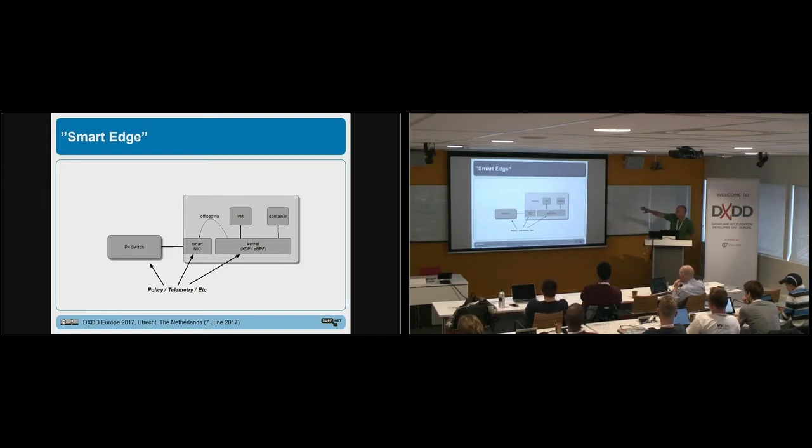So this is basically this ecosystem. The VMs and containers on the server, kernel with XDP and eBPF, SmartNIC in the server that can do offloading and can also be programmed. And towards the wide area network, P4 switches that are also programmable. And both the P4 switch, the SmartNIC and the kernel are programmable with policy, telemetry, etc.